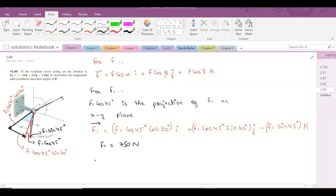So F1 becomes, after substituting the values, if we substitute 750 right here, then it would become 459.3 i plus 265.2 j minus 530.3 k. So now we have defined these two forces in terms of Cartesian vector form.